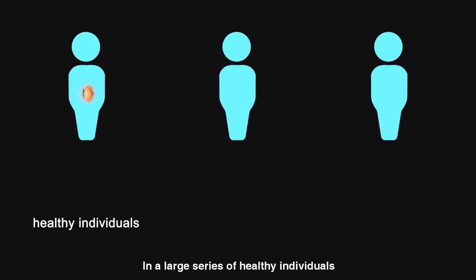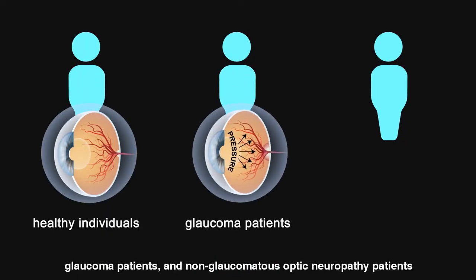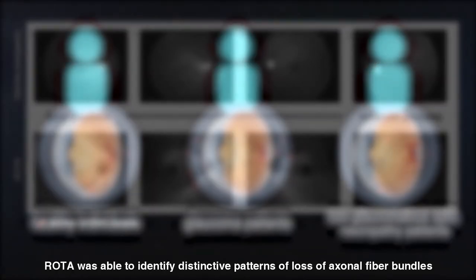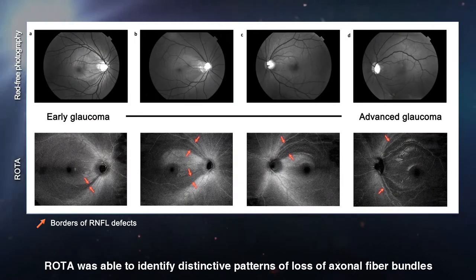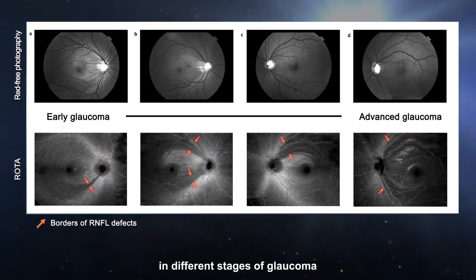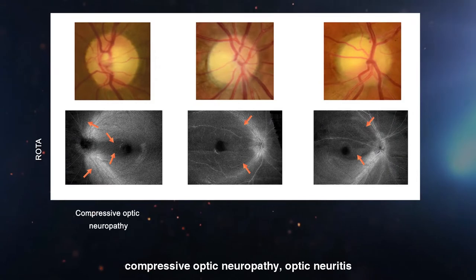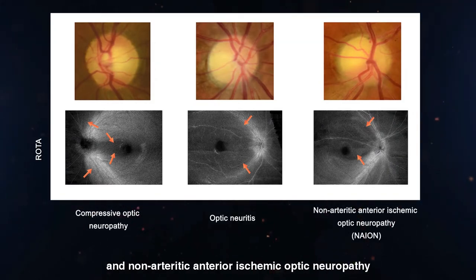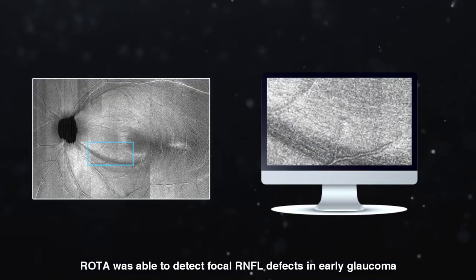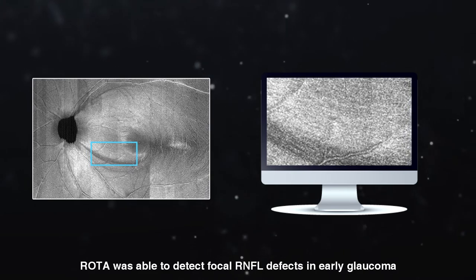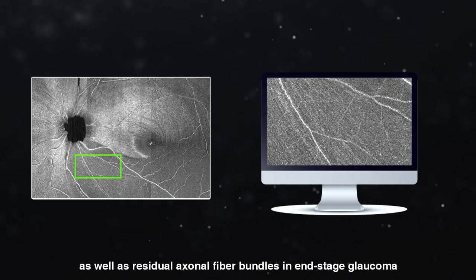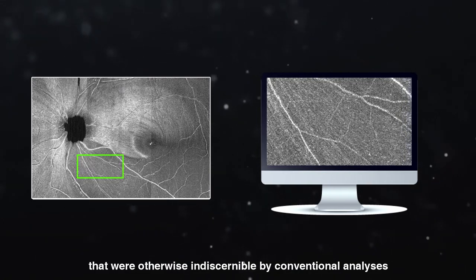In a large series of healthy individuals, glaucoma patients, and non-glaucomatous optic neuropathy patients, ROTA was able to identify distinctive patterns of loss of axonal fiber bundles in different stages of glaucoma, compressive optic neuropathy, optic neuritis, and non-arteritic anterior ischemic optic neuropathy. ROTA was also able to detect focal RNFL defects in early glaucoma as well as residual axonal fiber bundles in end-stage glaucoma that were otherwise indiscernible by conventional analyses.